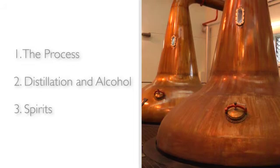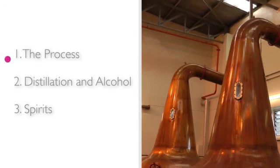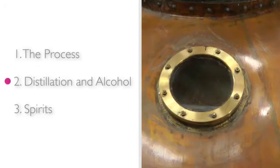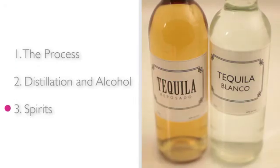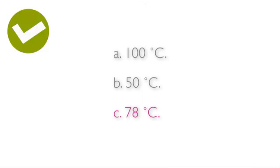To recap, in this lesson we looked at the process of distillation, distillation and alcohol, and spirits. To see if you were paying attention, can you remember at what temperature alcohol boils? Is it A. 100 degrees Celsius, B. 50 degrees Celsius, or C. 78 degrees Celsius? If you said C. 78 degrees Celsius, you're correct. Well done.